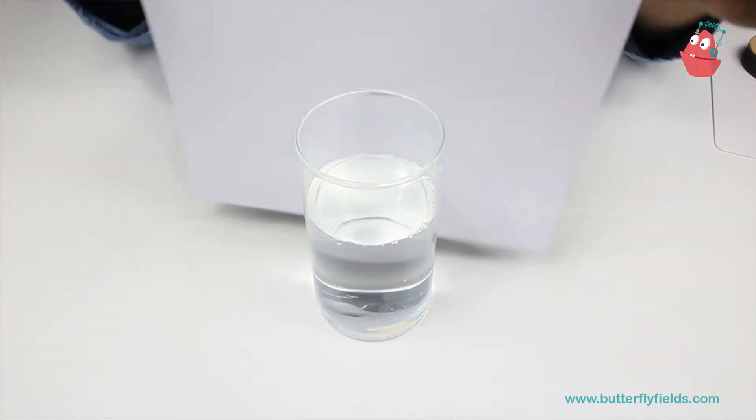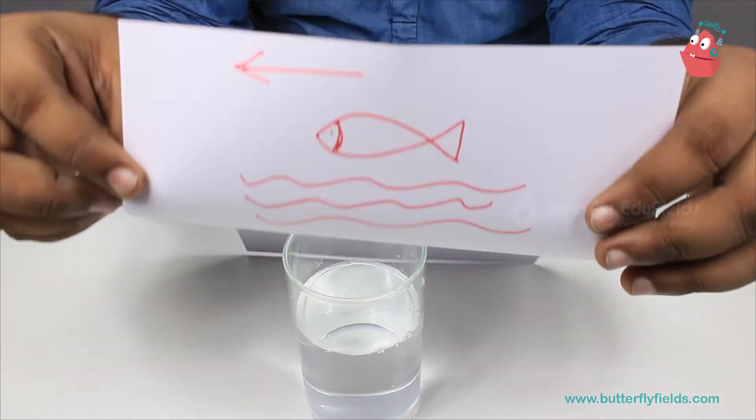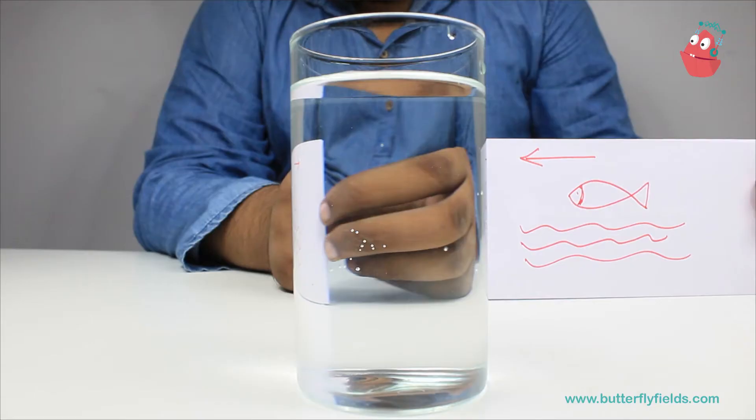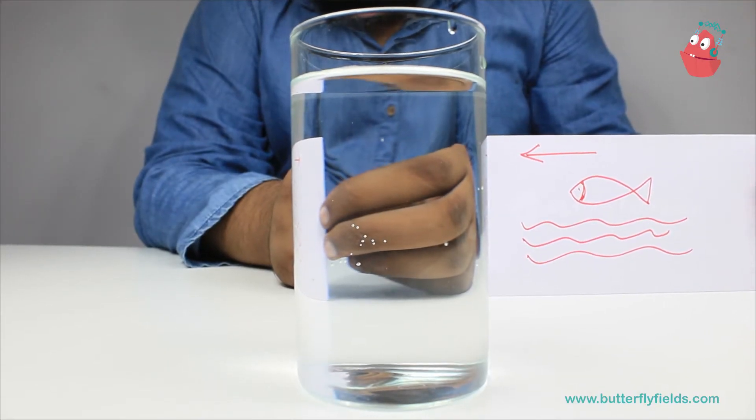Now, here you can see the fish is moving towards my right. But now, in which direction is it moving?